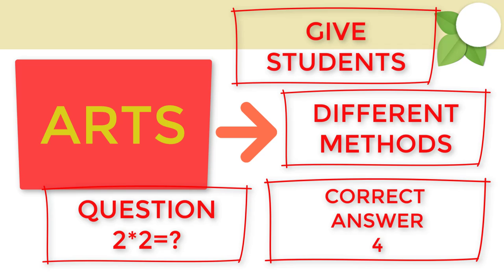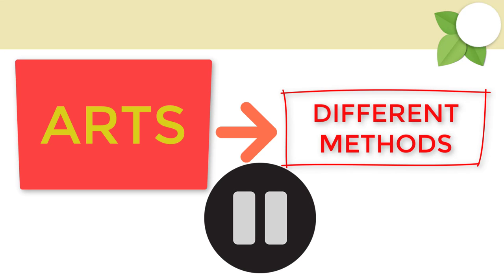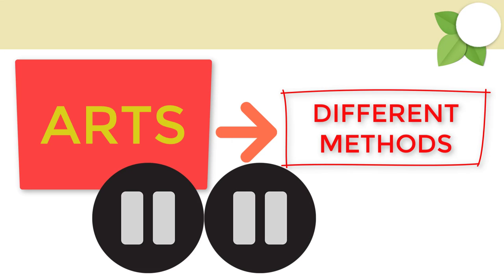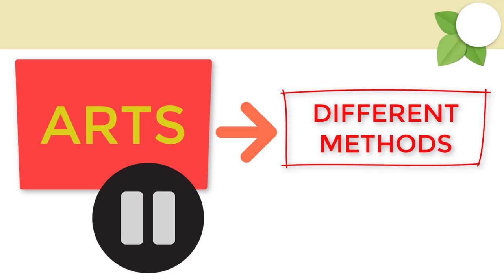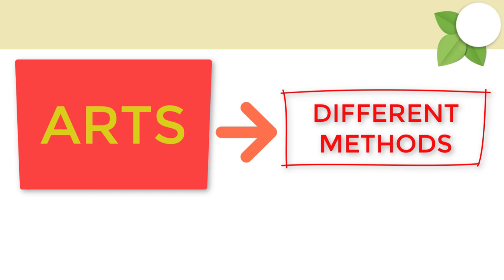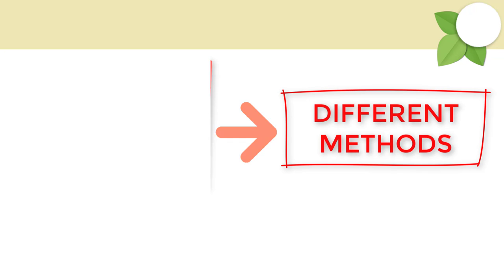So somebody can like in their mind, somebody will be like there are two person here, two person there. So one, two, three and four. And different person will have different ways to do that. So that is arts.